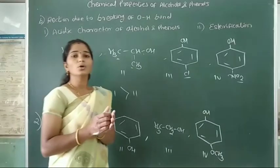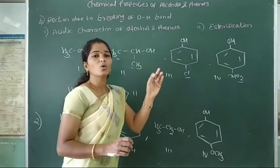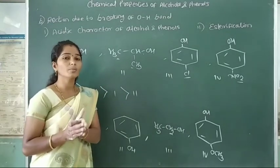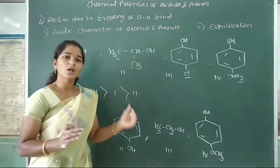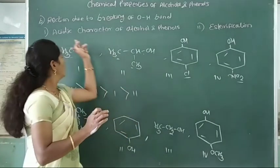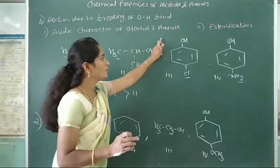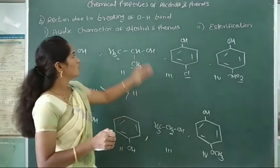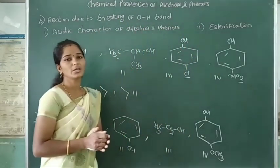Today we studied about the acidic character of alcohols and phenols. The acid strength of alcohols and phenols is dependent upon the stability of the conjugate base. In alcohol, the conjugate base is the alkoxide ion; in phenol, it is the phenoxide ion. Next lecture, we will study esterification reaction — the reaction due to breaking of the oxygen-hydrogen bond.